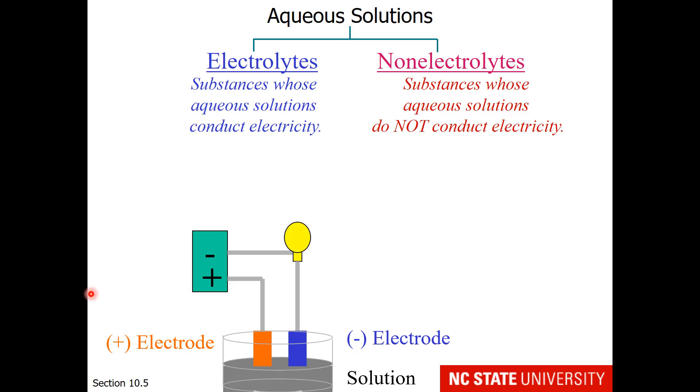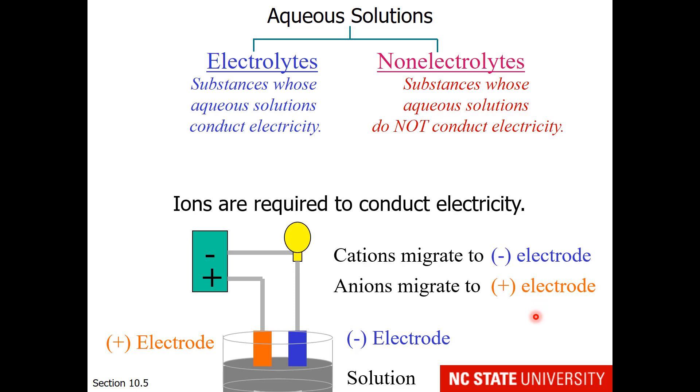The apparatus is plugged into the wall and is generating an electric current. We have a negative electrode and a positive electrode, which are wires dipped into our solution. If ions flow in the solution, we complete the electric circuit such that the light bulb will light. Cations migrate to the negative electrode because opposite charges attract, and anions migrate to the positive electrode. This means that aqueous solutions that are electrolytes need to have cations and anions in them. Ions conduct electricity and molecules do not.